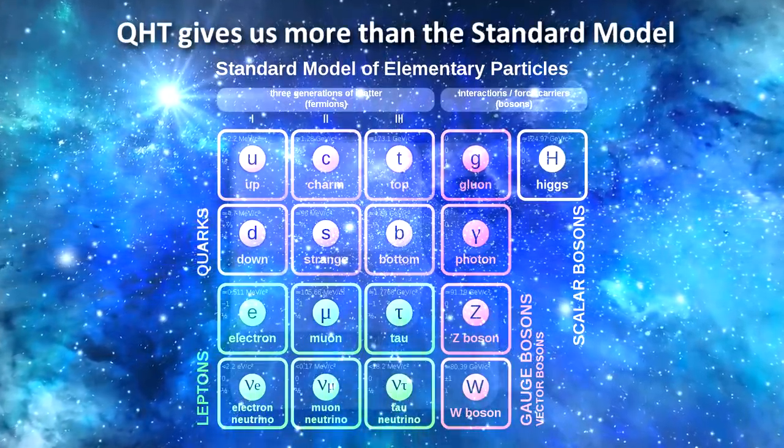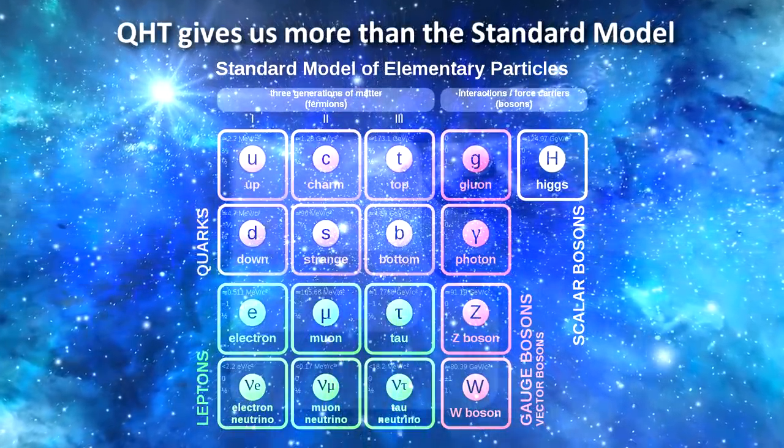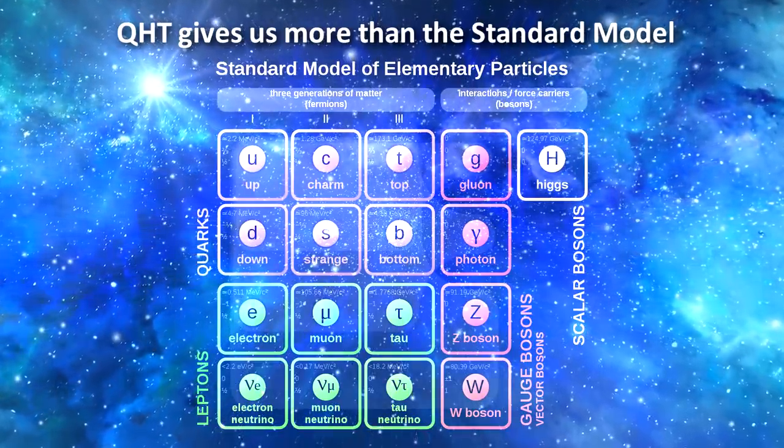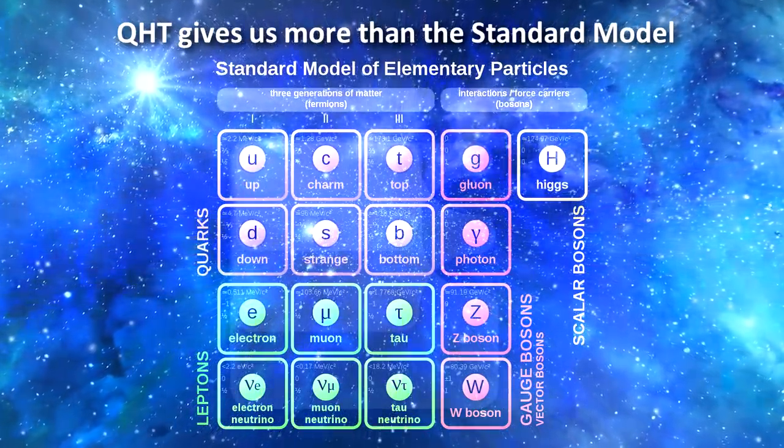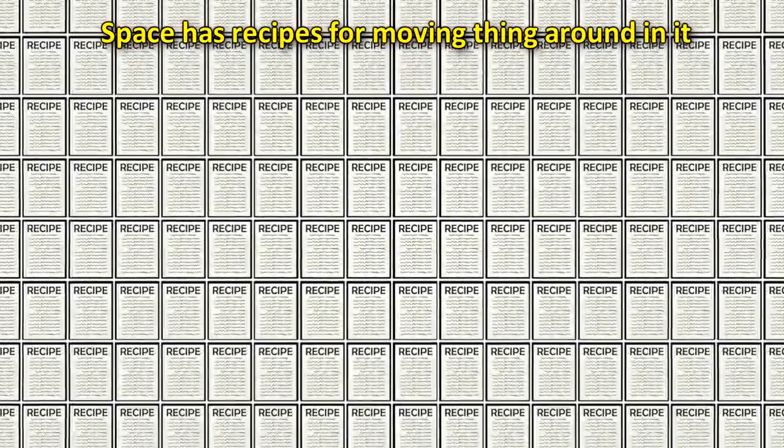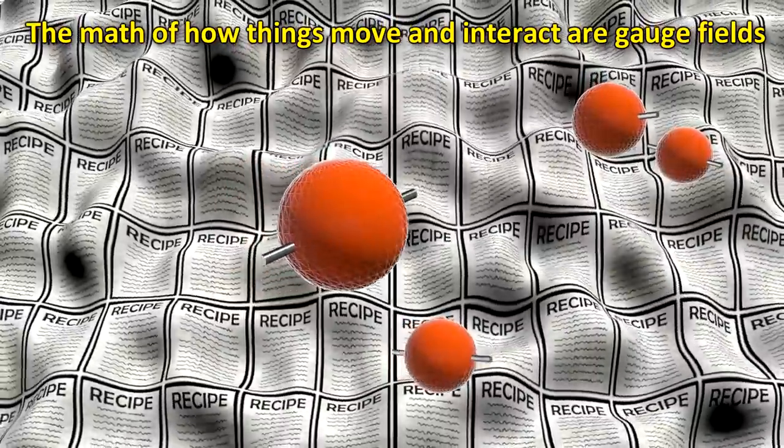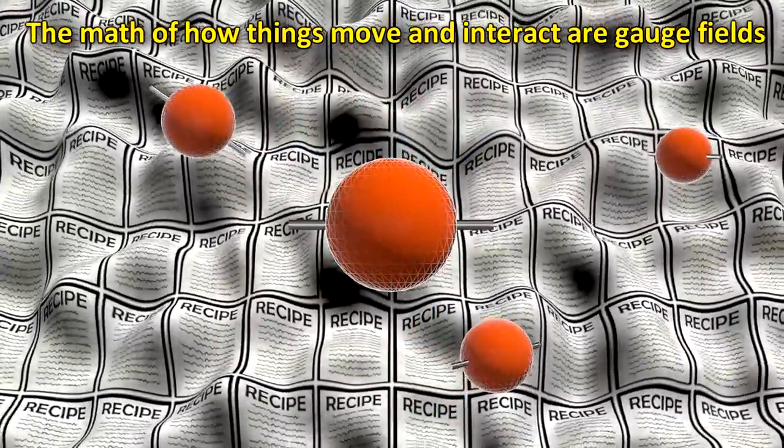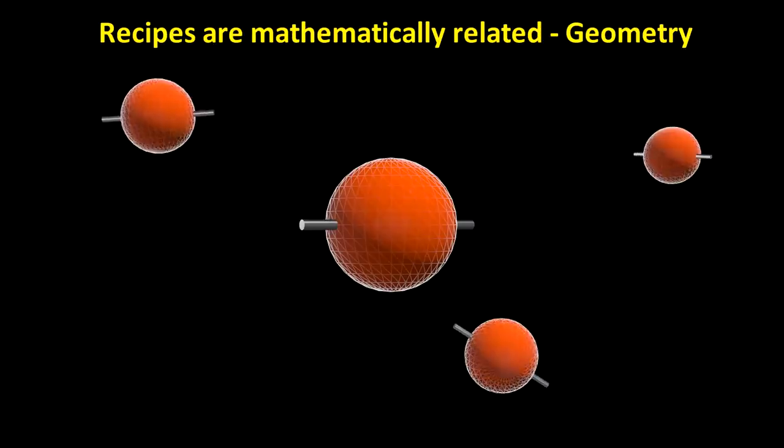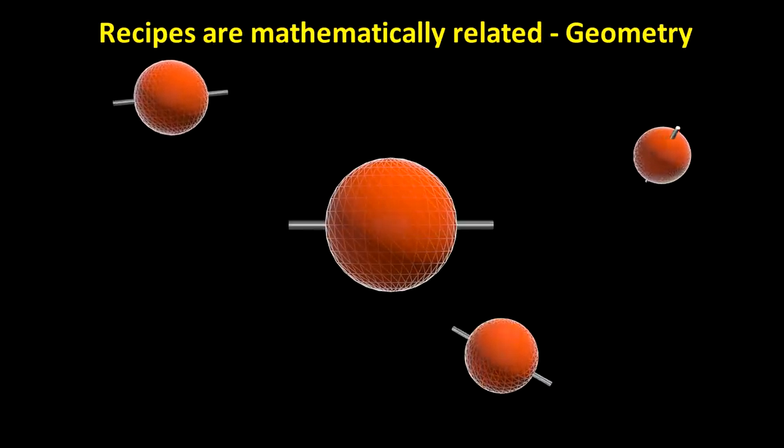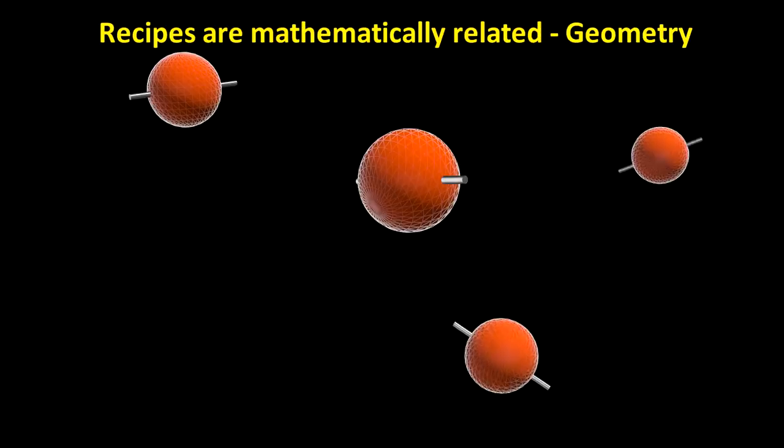This includes the mathematics of the standard model. But QHT mathematics gives us more than just the standard model, which is what you would expect if this theory is to be a candidate for a theory of everything. Let's look at the overall picture. In QHT you start with an empty 3D space, and you consider within this space an infinite number of recipes, which are basically combinations of movements. These are gauge fields. The gauge fields represent the mathematics of how things interact with each other. This space of recipes is infinite, but more importantly, the recipes are mathematically related to each other. They have a geometry.